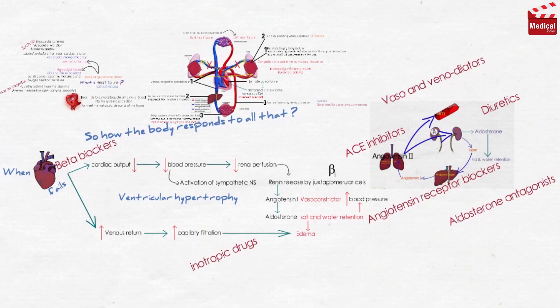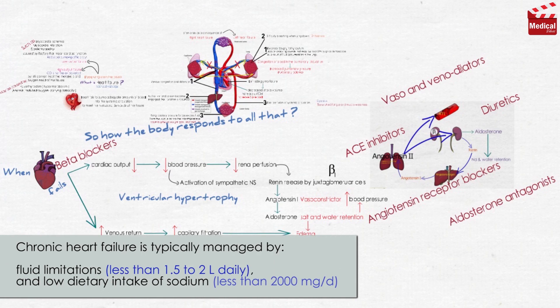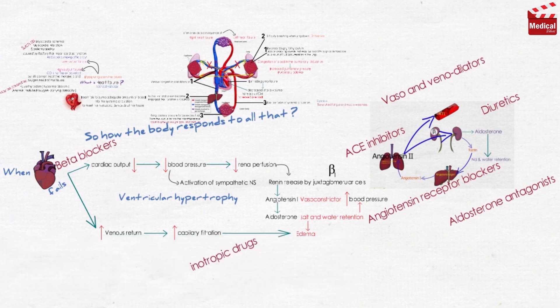Before we start talking about drugs, we should know that chronic heart failure is typically managed by fluid limitations of less than 1.5 to 2 liters daily, and low dietary intake of sodium, less than 2,000 milligrams per day. The first category used to manage heart failure is the renin-angiotensin-aldosterone system inhibitors, which are divided into ACE inhibitors, angiotensin receptor blockers, and aldosterone antagonists.